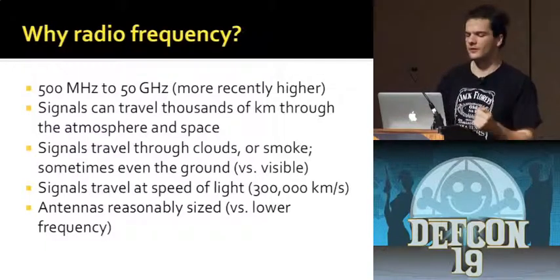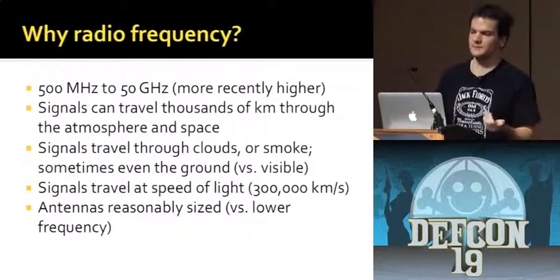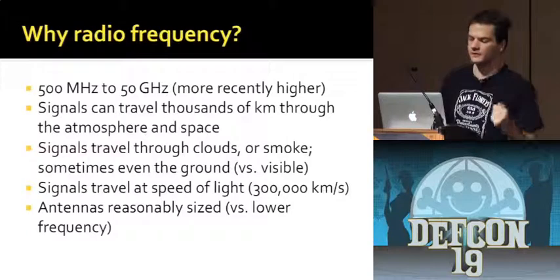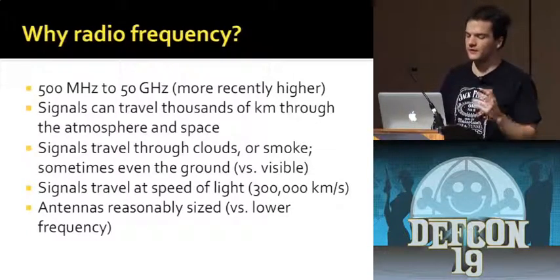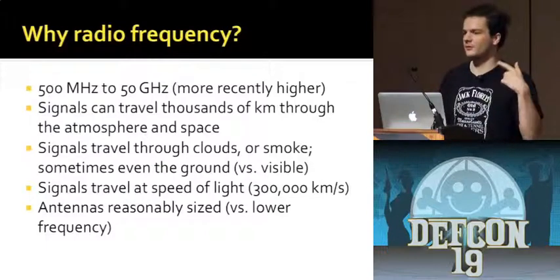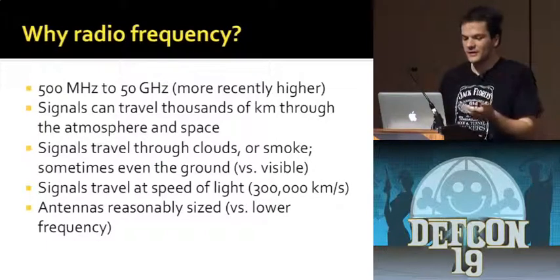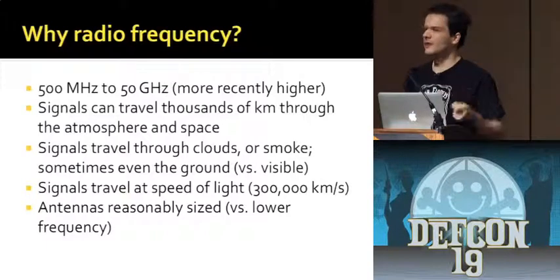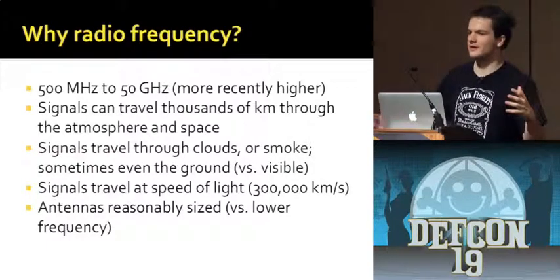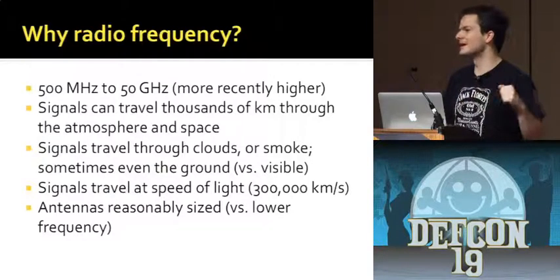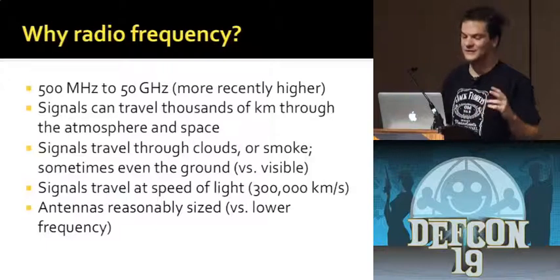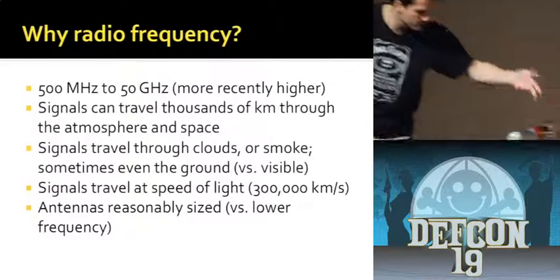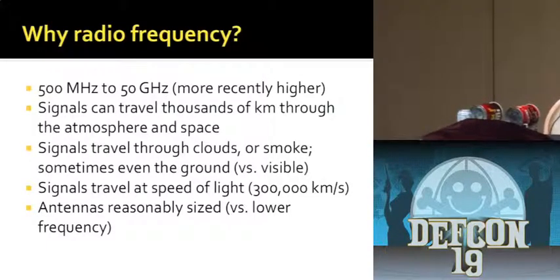The signals travel really fast — 300,000 kilometers a second, which is about six or seven trips around the world per second. That's both a positive and a negative. The other advantage is that antennas are reasonably sized. At lower frequencies antennas can be enormous — 50 to 100 meters for a directional dish. But at 2.4 gigahertz we can build stuff with a coffee can that's three inches in diameter.